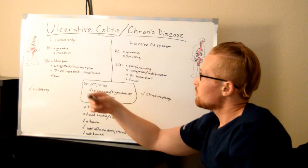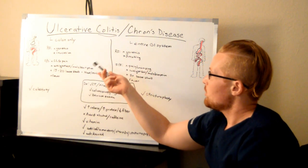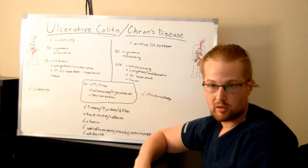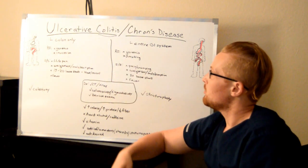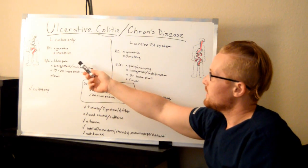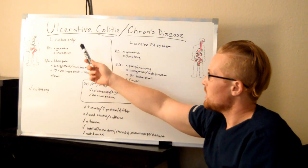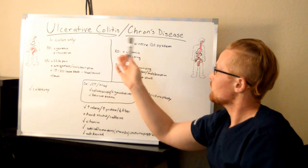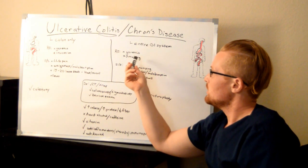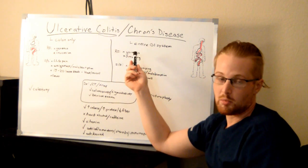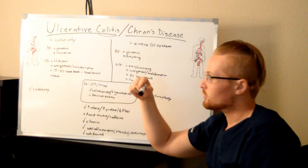Risk factors for both include genetics. Ulcerative Colitis is more common in Caucasians, and with Crohn's Disease, smoking can be a risk factor.